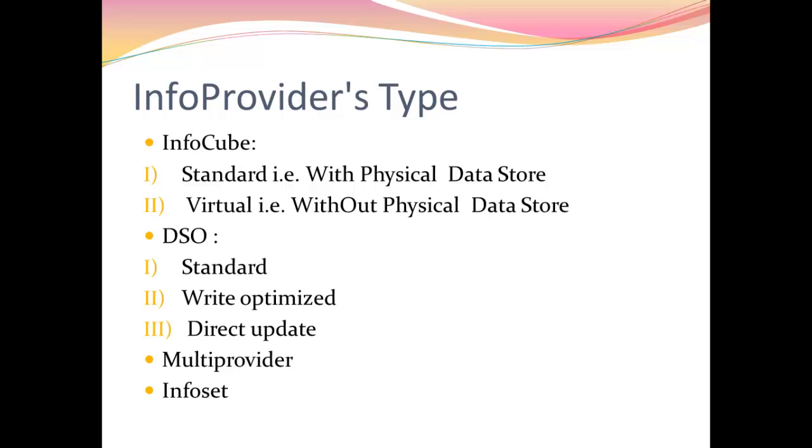MultiProvider and InfoSet are info providers but not a data target. They do not hold data physically. They are used when we want a query by combining data from two or more info providers - these can be info object, InfoCube, DSO or even InfoSet. Whenever we create a multi provider, at least there should be one common info object available in the info providers we are combining, and that info object should be part of a primary key. It makes the union of all the info providers and displays to us in the front end. InfoSet is similar to multi provider but it makes the intersection of data. Both do not store the data - at runtime the data is executed from their respective info providers.